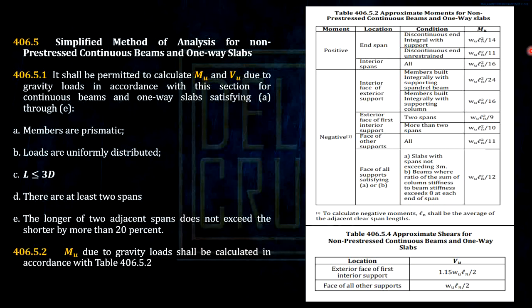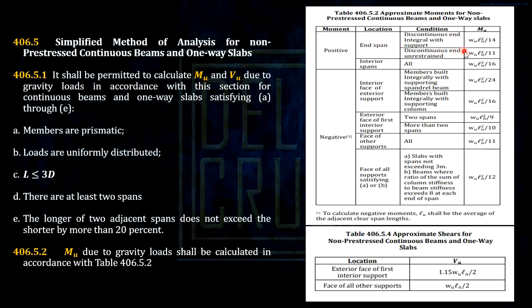So this is the code. These are the moment coefficients and shear coefficients given in the code, along with the general requirements in order to use them. What I will do is interpret these conditions. This covers approximate moments for non-prestressed continuous beams and one-way slabs.